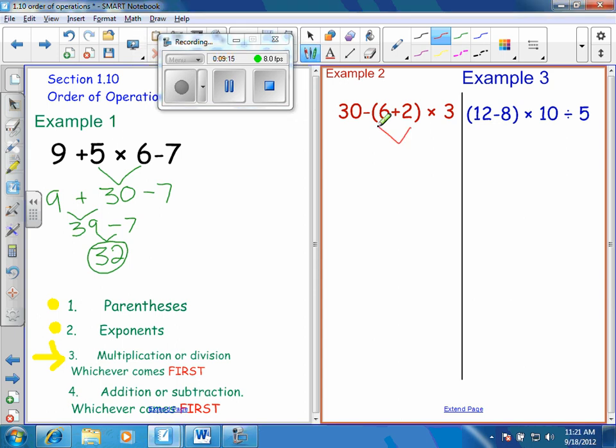Right, do parentheses first, so that's 8. And then I drop the 30 down. Perfect. And then I multiply 8 times 3. That's correct. Now raise your hand if you agree with Nathan.